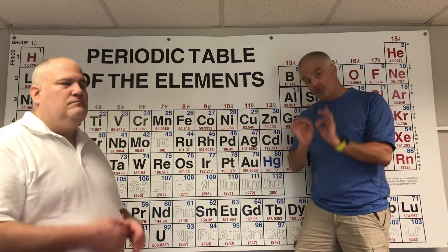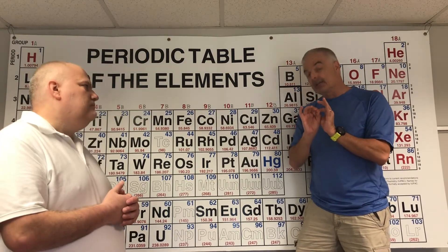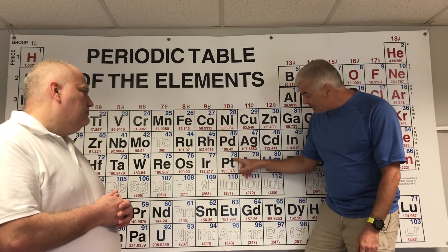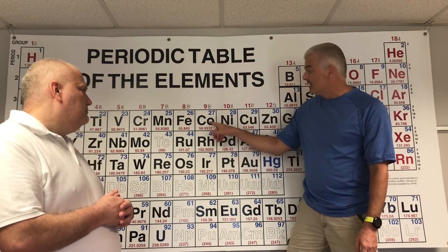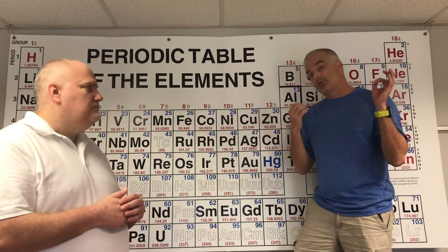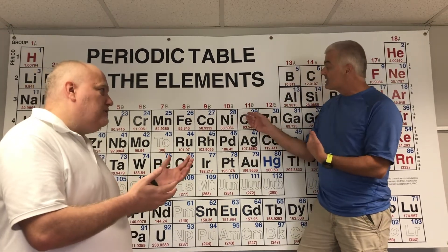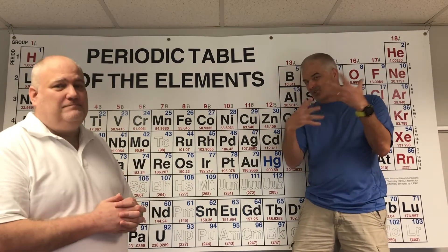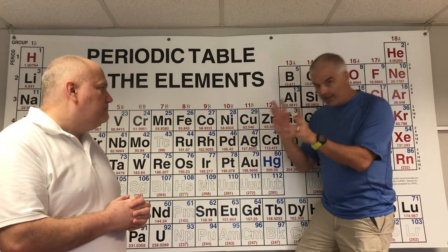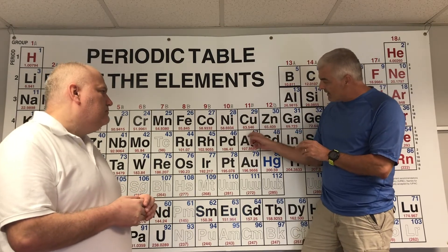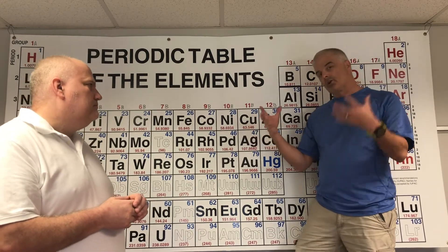The atomic number represents, most importantly, the number of protons in the nucleus of the atom. So copper has 29 protons, platinum has 78, cobalt has 27 — you get the idea. The second thing the atomic number represents is the number of electrons, if the atom is neutral — meaning it has no charge. We'll learn about that later.